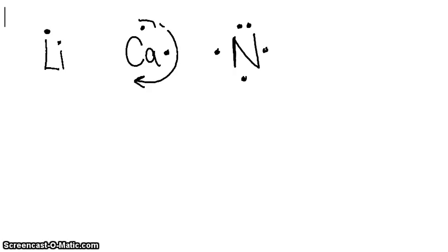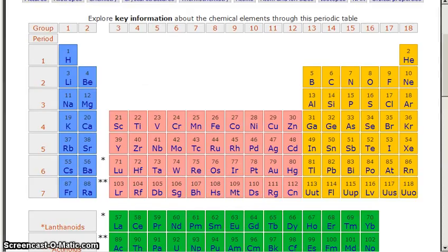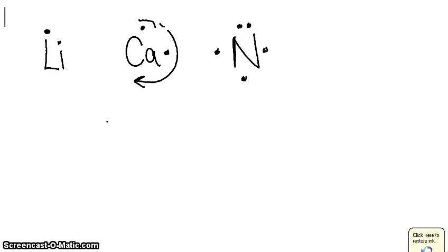Our last example is iodine. You find iodine on the periodic table, and you see that it has seven valence electrons. So 1, 2, 3, 4, 5, 6, 7.